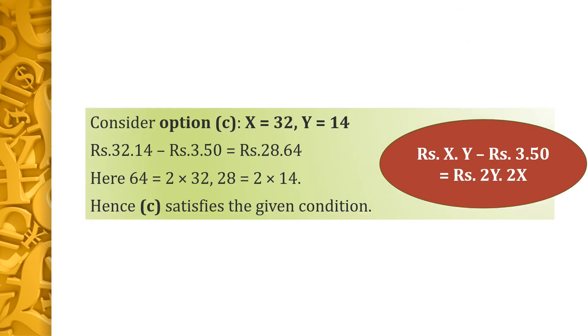Considering option C, 32 rupees and 14 paisae: substituting x equal to 32 and y equal to 14 in the LHS of equation 1, we get 32 rupees and 14 paisae minus 3 rupees and 50 paisae equals 28 rupees and 64 paisae. Here, 64 equals 2 into 32 and 28 equals 2 into 14. Hence option C satisfies condition 1. Therefore, the right answer is option C.